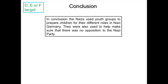The conclusion: in conclusion, the Nazis used youth groups to prepare children for their different roles in Nazi Germany, and they were also used to help make sure that there was no opposition to the Nazi party. An answer like this with three paragraphs of detailed knowledge and understanding would probably be about 7 out of 12 marks in the exam. Have a look at your own answer — what mark have you received, what have you done well, and what do you need to do to improve to achieve your target grade? If this is a weak area in your knowledge, make a note that you need to prioritise it for your revision.